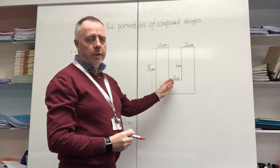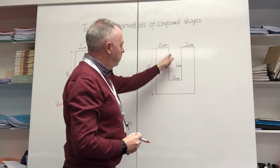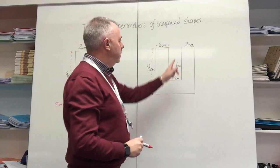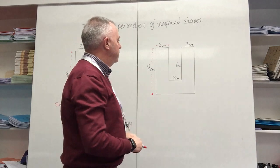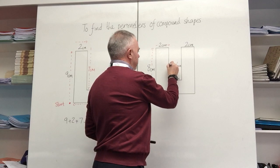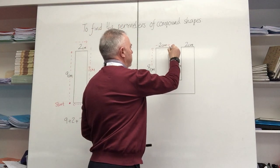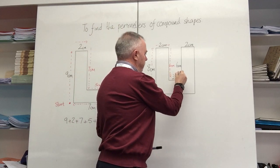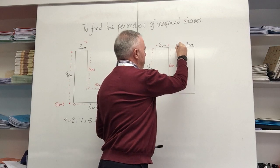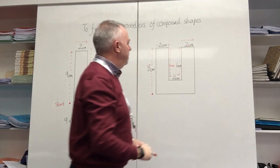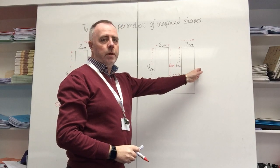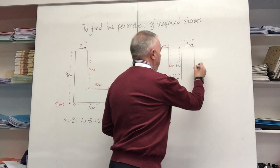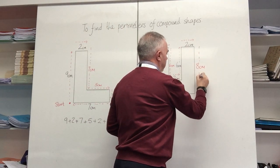Now I've got a problem because this vertical measurement here I don't know, however I do know that the opposite side is the same length — it's 6 centimeters — so this side here is also 6 centimeters and I can continue my journey. I go down to the bottom and then I've got 2 centimeters, then another 6 centimeters, then 2 centimeters, then 2 centimeters. The opposite outside side is 8 centimeters, so I can add 8 centimeters in here and carry on.